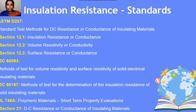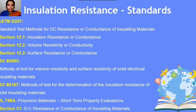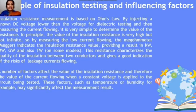Relevant standards include the standard test method for DC resistance or conductance of insulating material: sections 12.1 resistance and conductance, 12.2 volume resistivity and conductivity, 12.3 surface resistance and conductance. IEC 693 deals with volume resistivity and surface resistivity of solid dielectric materials. IEC 60167 covers determination of insulation resistance of solid insulating material. UL 746A covers polymeric materials short-term property evaluation, section 21, DC resistance or conductance of insulating materials.